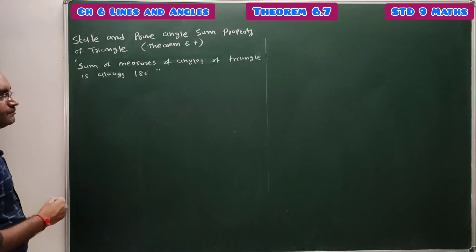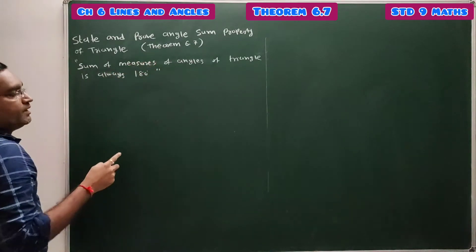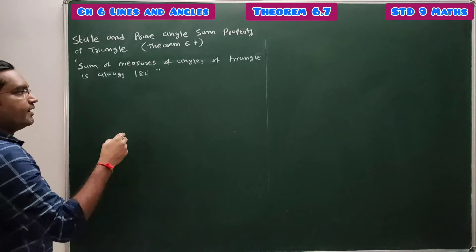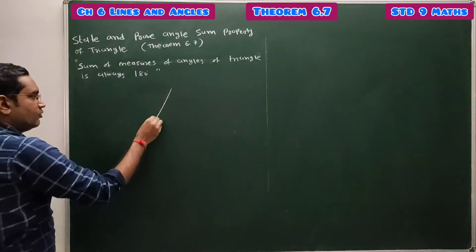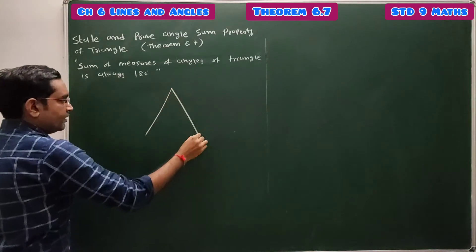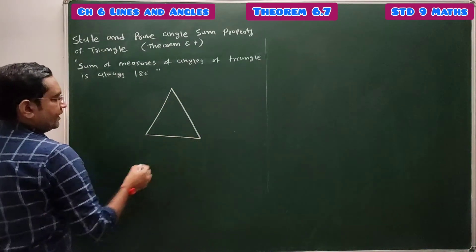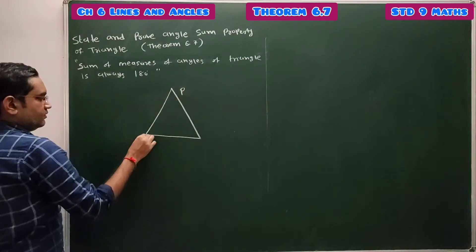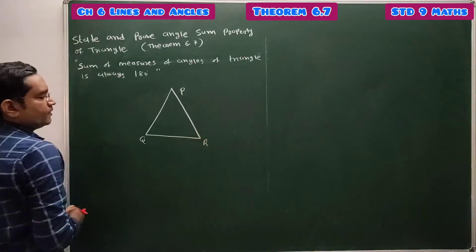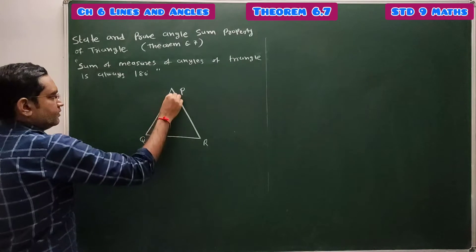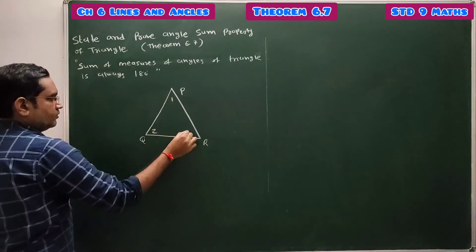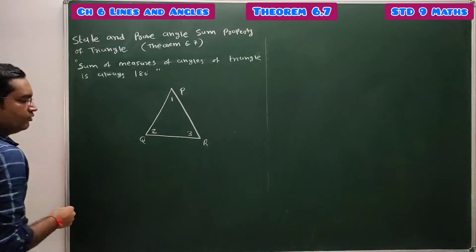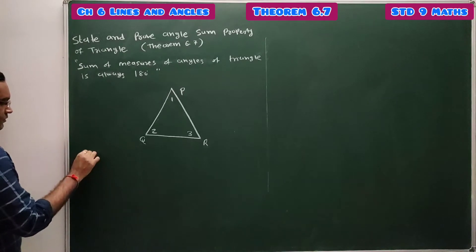First, draw the diagram. We are given triangle PQR. For this triangle, there are three angles — angle 1, angle 2, and angle 3. You have to prove that the sum of measures of all three angles is 180 degrees.